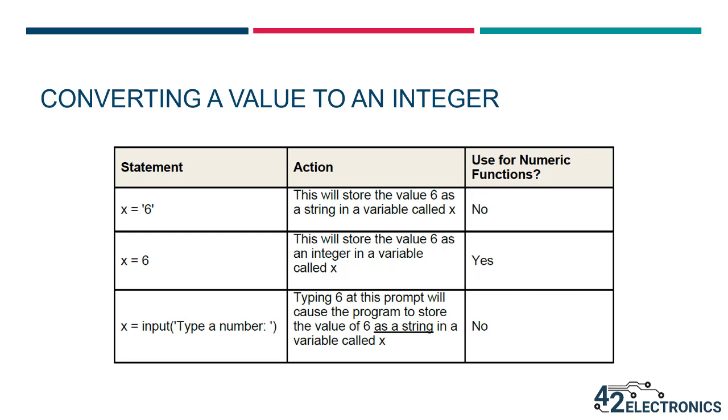Let's take a look at the examples in this table. In the first row, the 6 is surrounded by quotation marks, so Python will interpret the 6 as a string, piece of text. And while Python will store it as a variable x, Python won't use it for a mathematical function because it doesn't see it as a number. In the second row, there's no quotation marks, so Python will interpret this 6 as a numeric value or an integer called variable x.